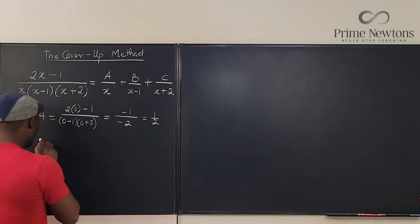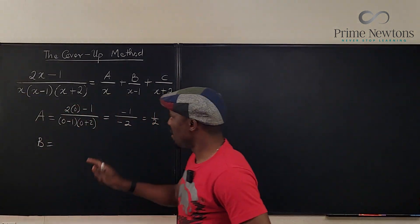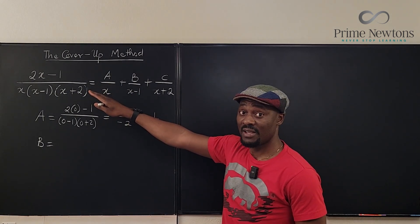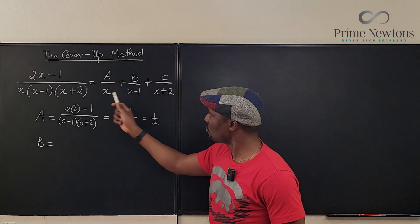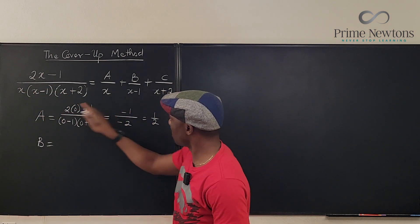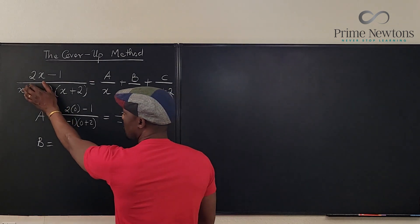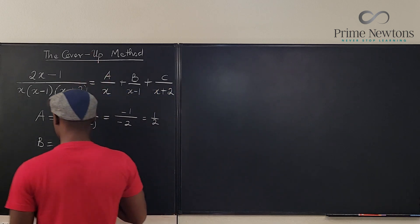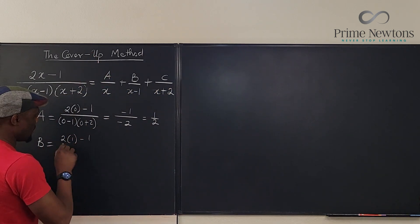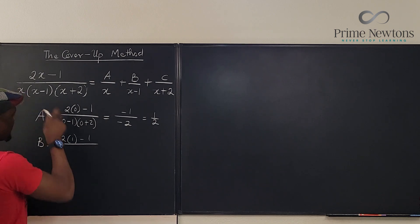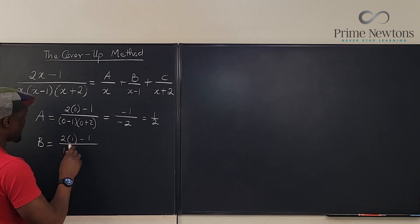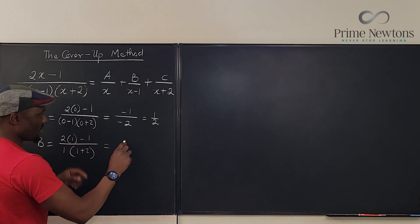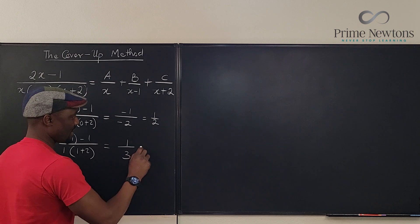Let's do that for B. So for B the number I don't want is 1. See how easy it is to go here and get your B. So I'm gonna say B is I don't want 1 so I'm gonna cover up this one. So this guy is not part of my calculation. I'm covering this guy up so I'm gonna have 2 times 1 is 2. 2 minus 1 is 1. So on top of it I'm going to have 2 times 1 minus 1 over this is gonna be remember I'm covering this guy up so it's gonna be 1 times 1 plus 2. This gives me 1 over 3 and that's my answer.